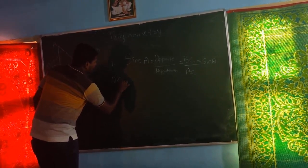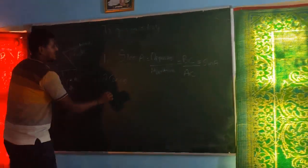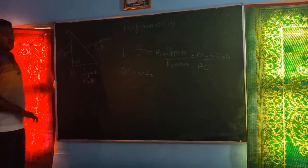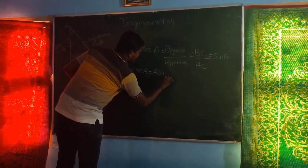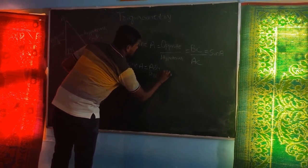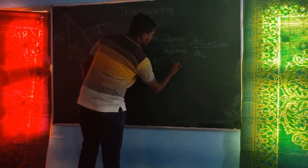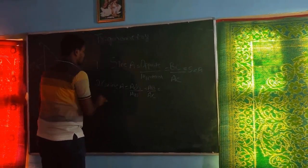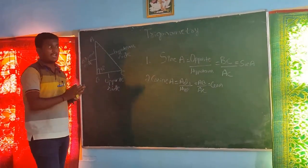The second important trigonometric ratio is cosine, which is complementary to sine. Cosine A will always be equal to adjacent by hypotenuse. The adjacent side will be AB and the hypotenuse side is AC. Cosine can be simply called as cos A. For any right angle triangle, the value of cos A will be equal to adjacent by hypotenuse side.